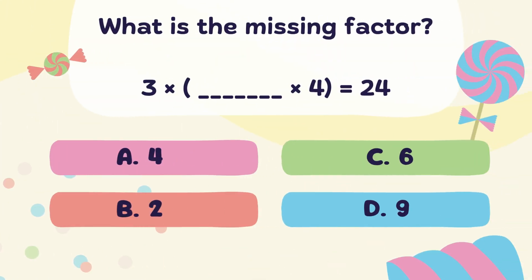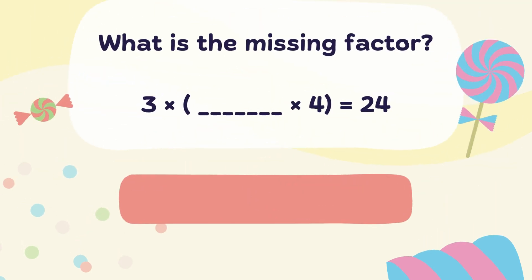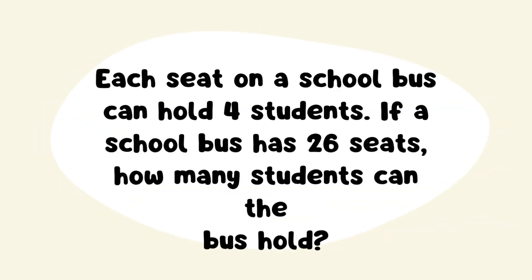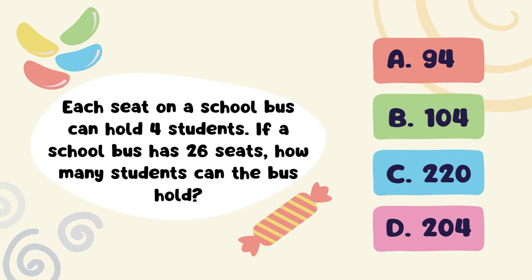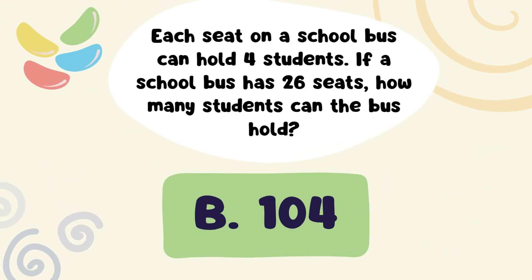Next Question: What is the missing factor? Right answer is Option B. 2. Next Question. Right answer is Option B. 2.